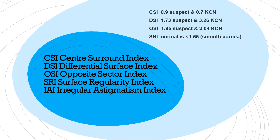There are five more Galilei indices. CSI: 0.9 is suspect and 0.7 is keratoconus — decreasing value indicates keratoconus. DSI: 1.73 is suspect and increasing values indicate keratoconus. OSI: 1.85 is suspect and 2.04 is keratoconus. SRI: normal is less than 1.55.